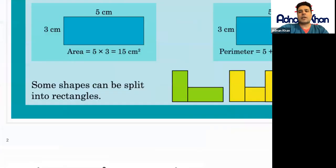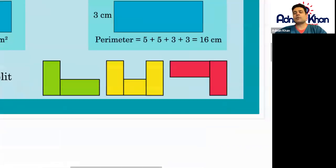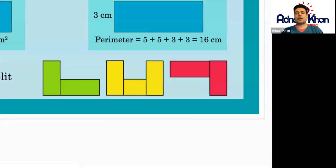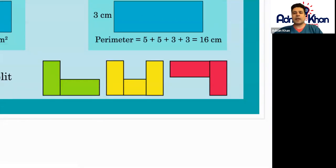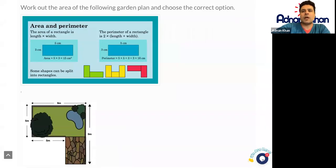Some shapes can also be split into rectangles. We've got two rectangles added together — these are called composite shapes. What we need to do is find the individual area of each rectangle and then add them together at the end.